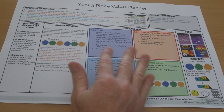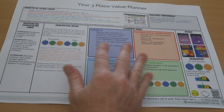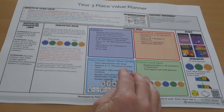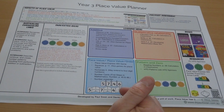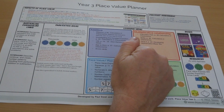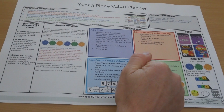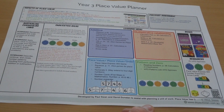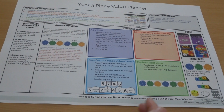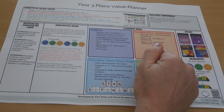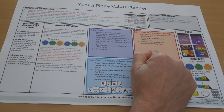The idea of a place value planner is that it works on a manual approach. If we want to have a balanced diet, you'd have to have something from each one of those sections of place value. There will be times when through your assessment you work out that some children are weaker at one aspect, so you might focus on a particular area, for example the multiplicative relationship.